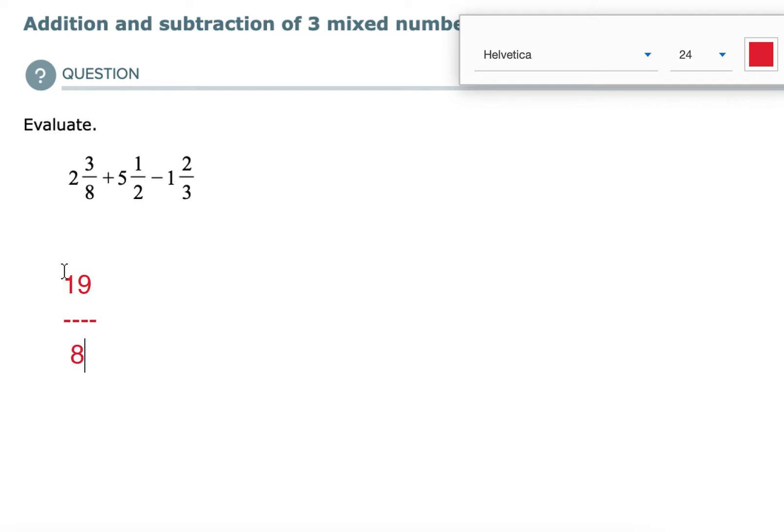So we keep the denominator. Okay, so I converted the first fraction. The second fraction, we do the same thing. Take that denominator, 2, multiply it to the whole number, 5. 2 times 5 makes 10. 10 plus 1 makes 11. So the second fraction is 11 over 2.